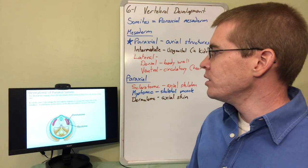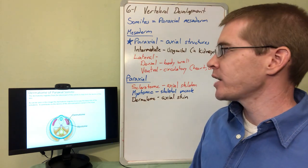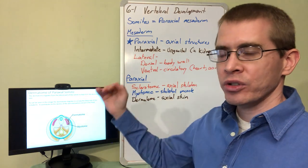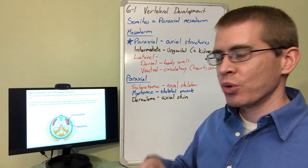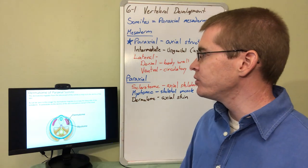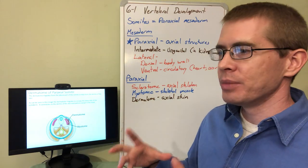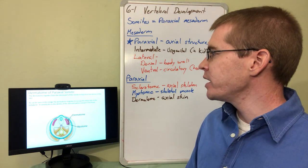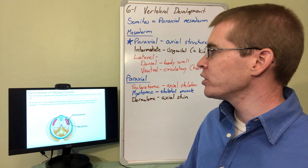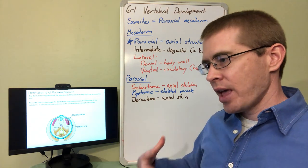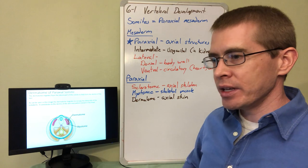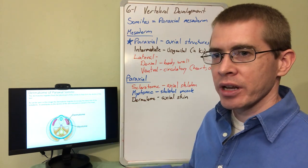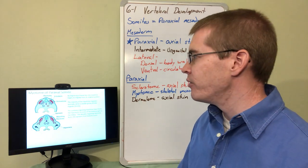Moving on to the dermatome of the paraxial somites, the dermatome migrates toward the posterior body wall and axial portion. It forms along the deep portion of the ectoderm to make the dermis of the skin. This contributes to the dermis everywhere in the body, including the limbs and anterior body wall—everywhere except the head, which has a specialized developmental structure.